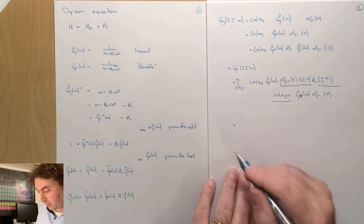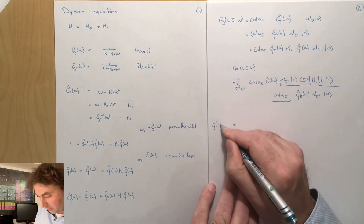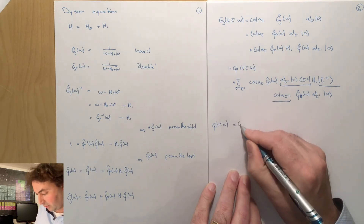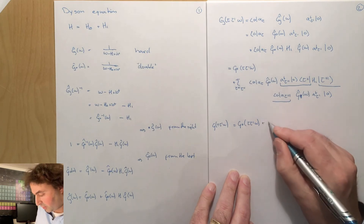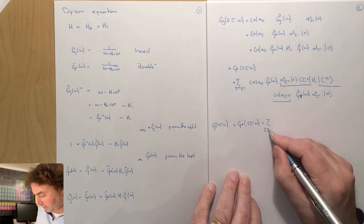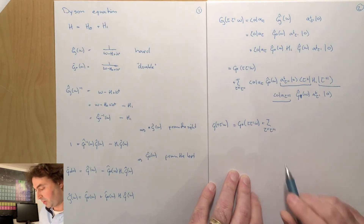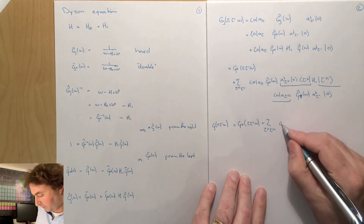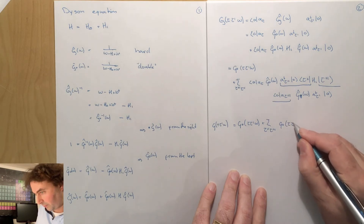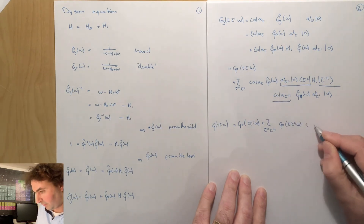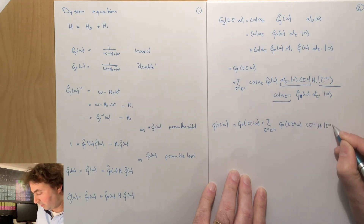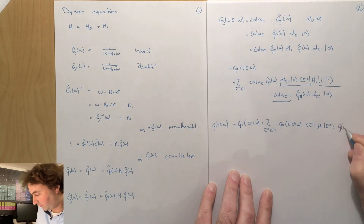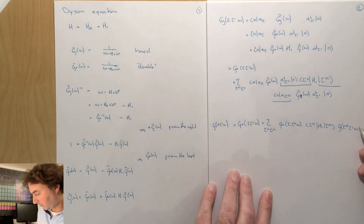So what we have is that our full Green's function G(tau, tau prime, omega) is equal to the bare Green's function without H1, plus a sum over two intermediate states given by quantum numbers tau double prime and tau triple prime of: G0(tau, tau double prime, omega) times the matrix element tau double prime H1 tau triple prime times the full Green's function G(tau triple prime, tau prime, omega).